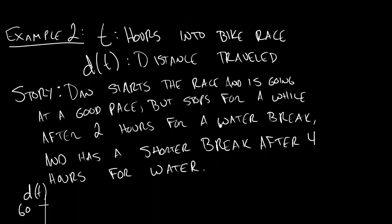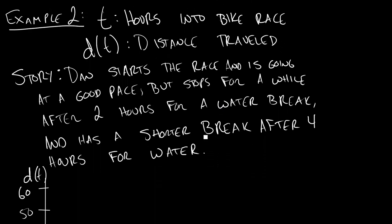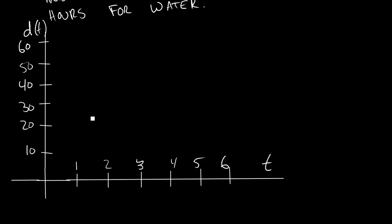Before we're done, let's take a little practice at making our own function. Here's a problem where T is the hours into a bike race again, but this time D is going to be the distance I have traveled — a lot different than the speed. The story we want to convey is: I start the race at a decent pace, but after two hours I stop for a water break. After four hours I stop for a shorter break, and then I get going again. To think about this, let's focus on input-output pairs — that's the core of what a function is.